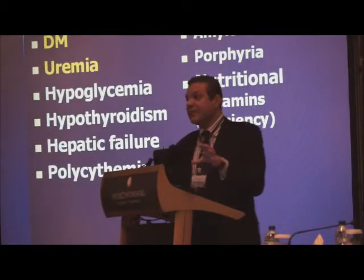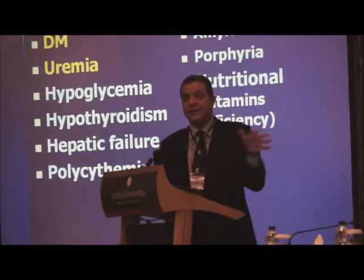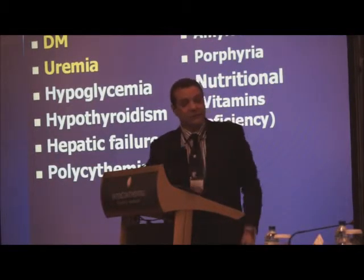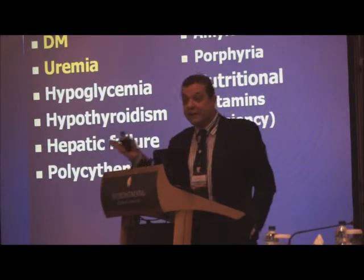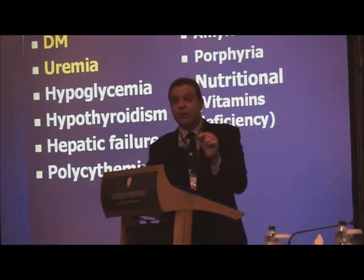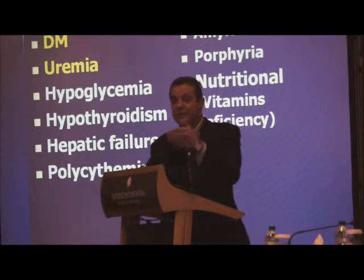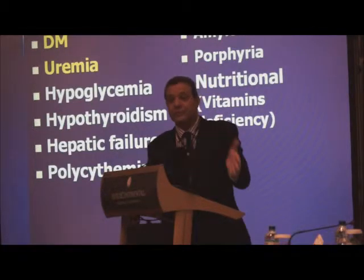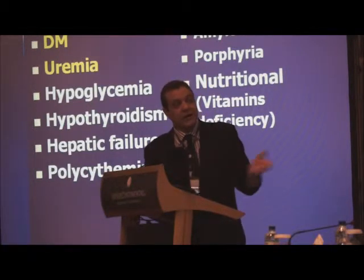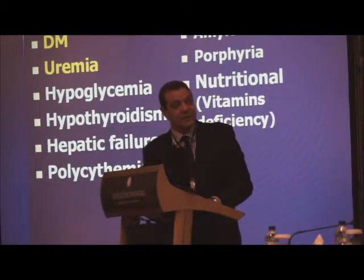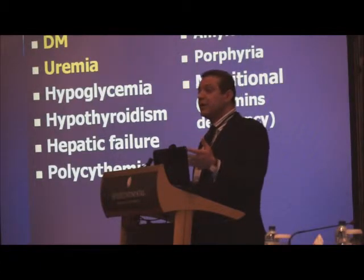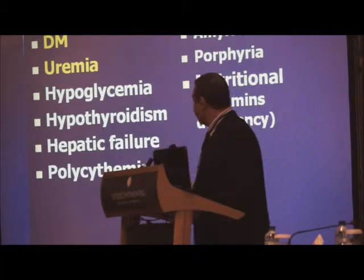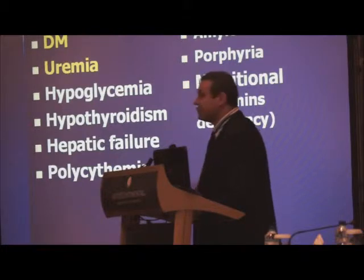Uremia comes in a subacute state, not like diabetes on the long run. We have to remember also that in patients with chronic renal failure, a large proportion of those patients were originally diabetic — otherwise they would not end with advanced diabetic nephropathy and subsequently chronic renal failure. Other causes include hypoglycemia, hypothyroidism, hepatic failure, whether due to alcohol or something else, polycythemia, amyloidosis, and porphyria.